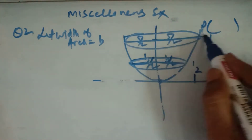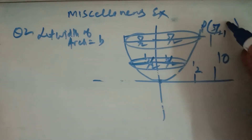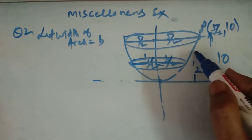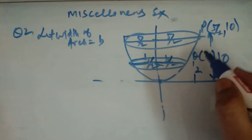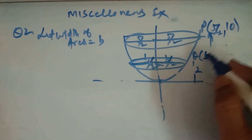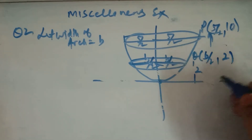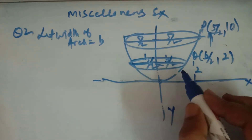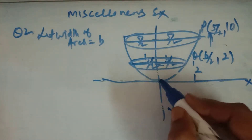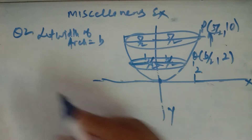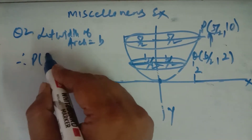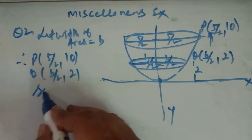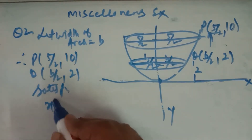The coordinates of point P will be X = 5/2 and Y = 10. The coordinate of Q: X coordinate is B/2 and Y = 2. We have to find the value of B. Let the width of the arc 2 meters from the base be B. So therefore points P(5/2, 10) and Q(B/2, 2) will satisfy the equation of the parabola.